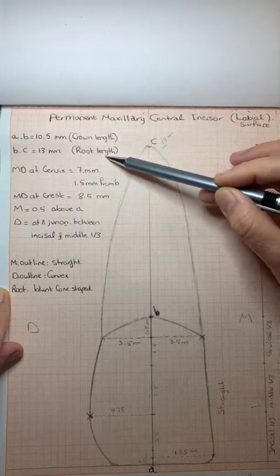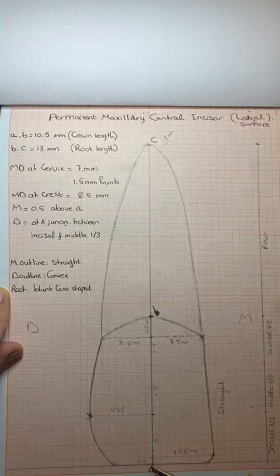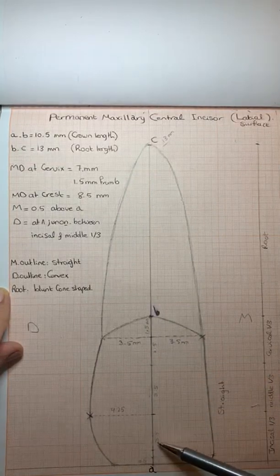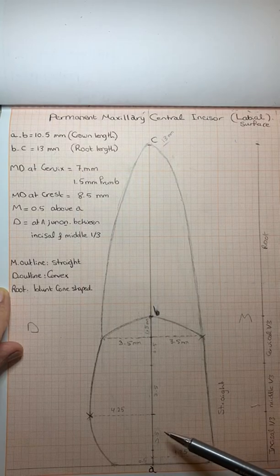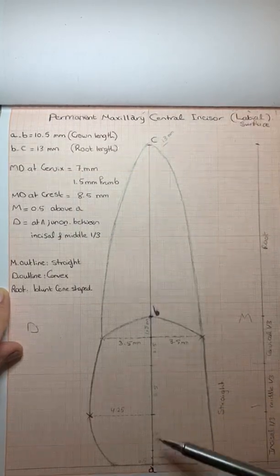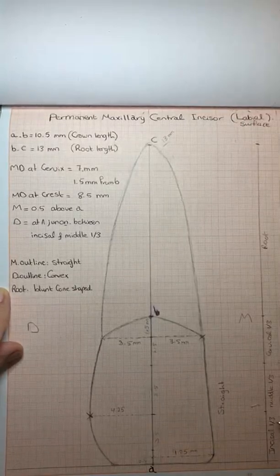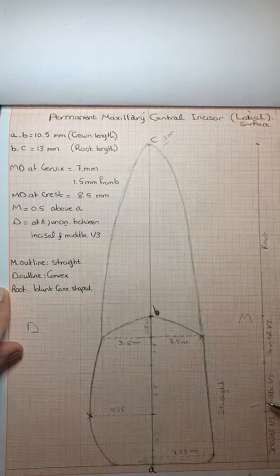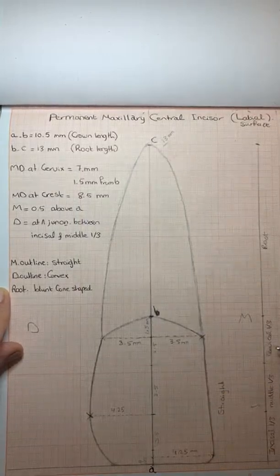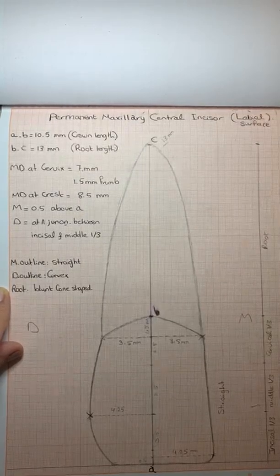The second step is to divide the crown into thirds. Each third is equal to 3.5 millimeters. So the first third from this one to this point, it will be the incisal third. The second one will be the middle third, and the last one is the cervical third. It is the starting point for every drawing.